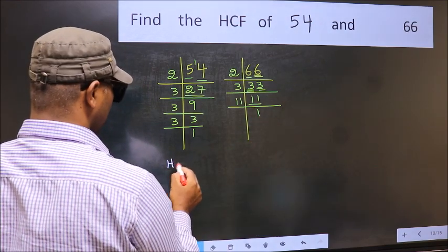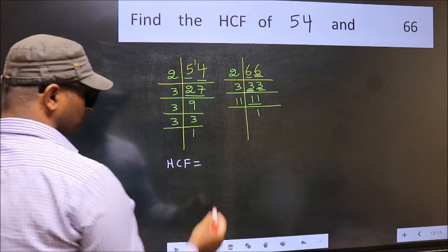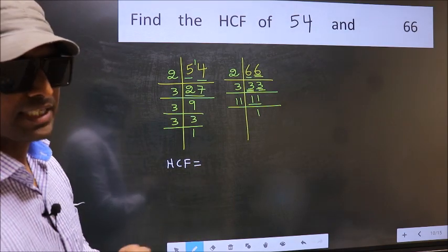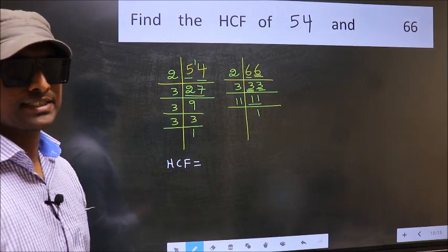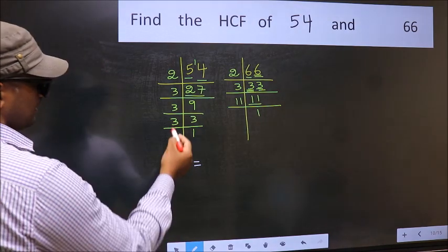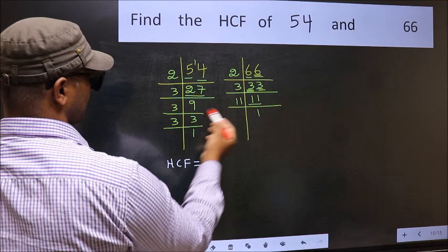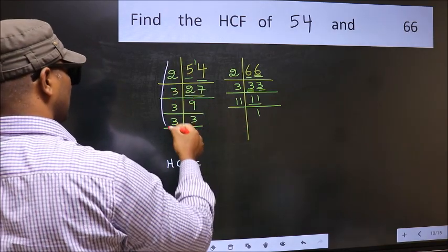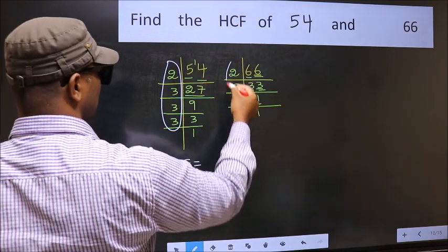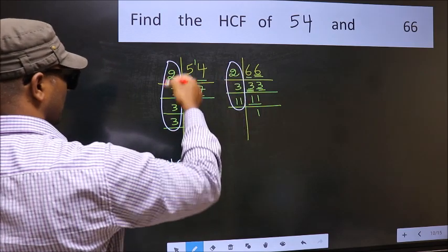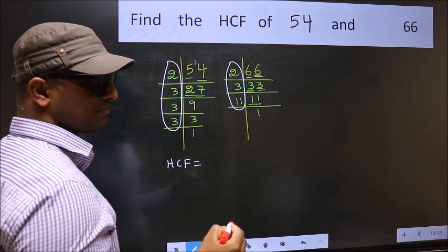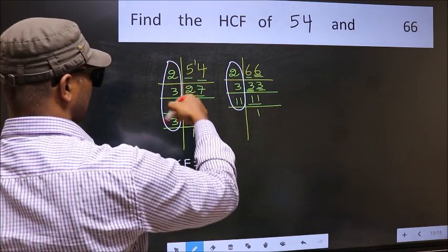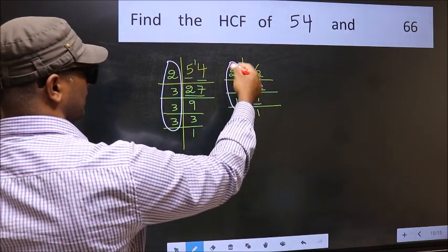Therefore our HCF is, HCF is the product of the numbers which should be present in these two places, that is here and also here, here and here. So now let us find the numbers which should be present here and here.